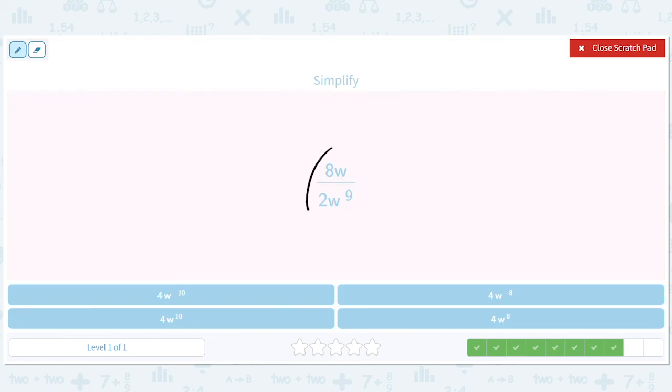How about this? We have 8 divided by 2, which is 4. And then we have w. There's a 1 here, right?